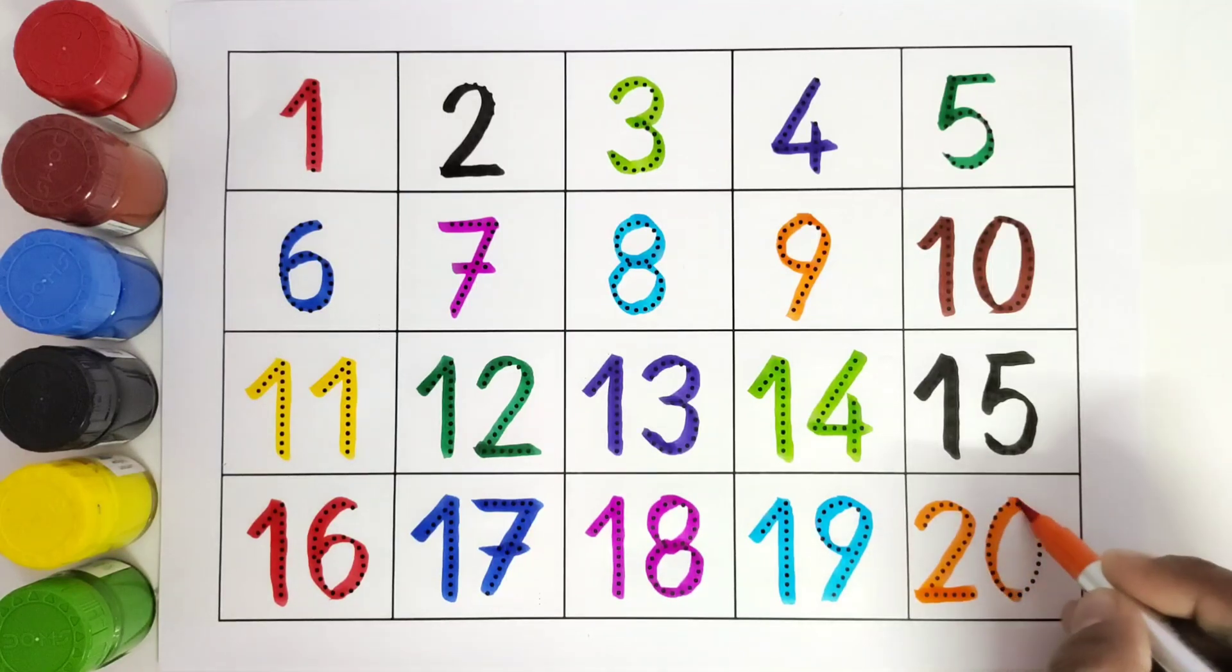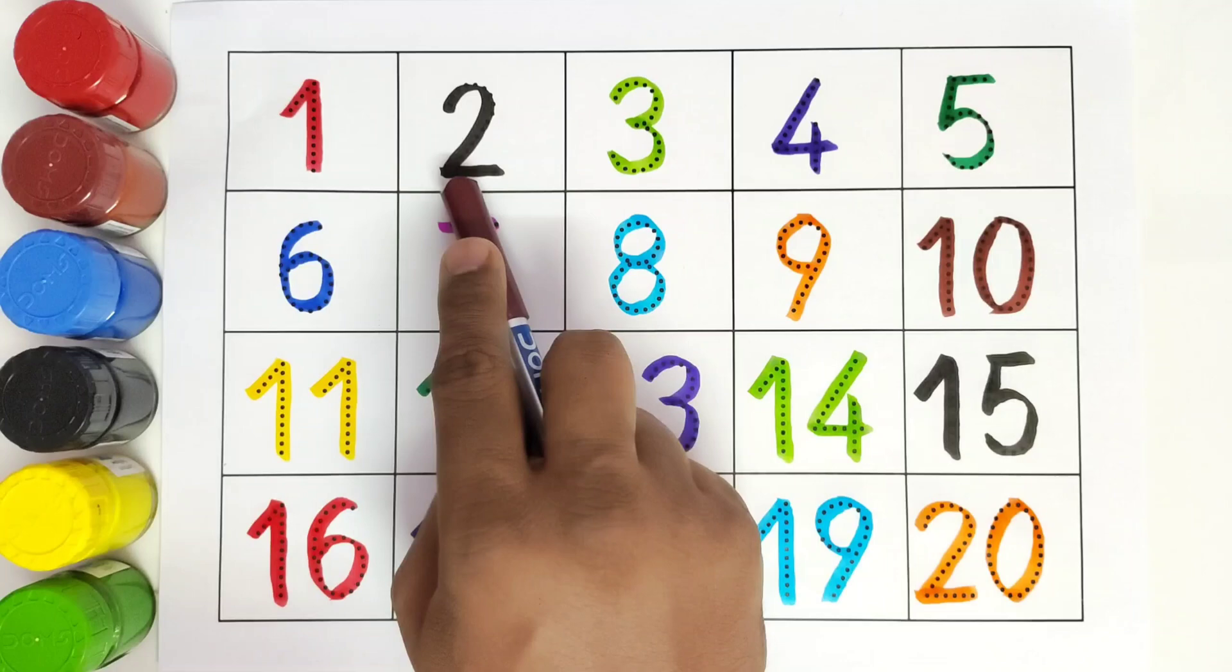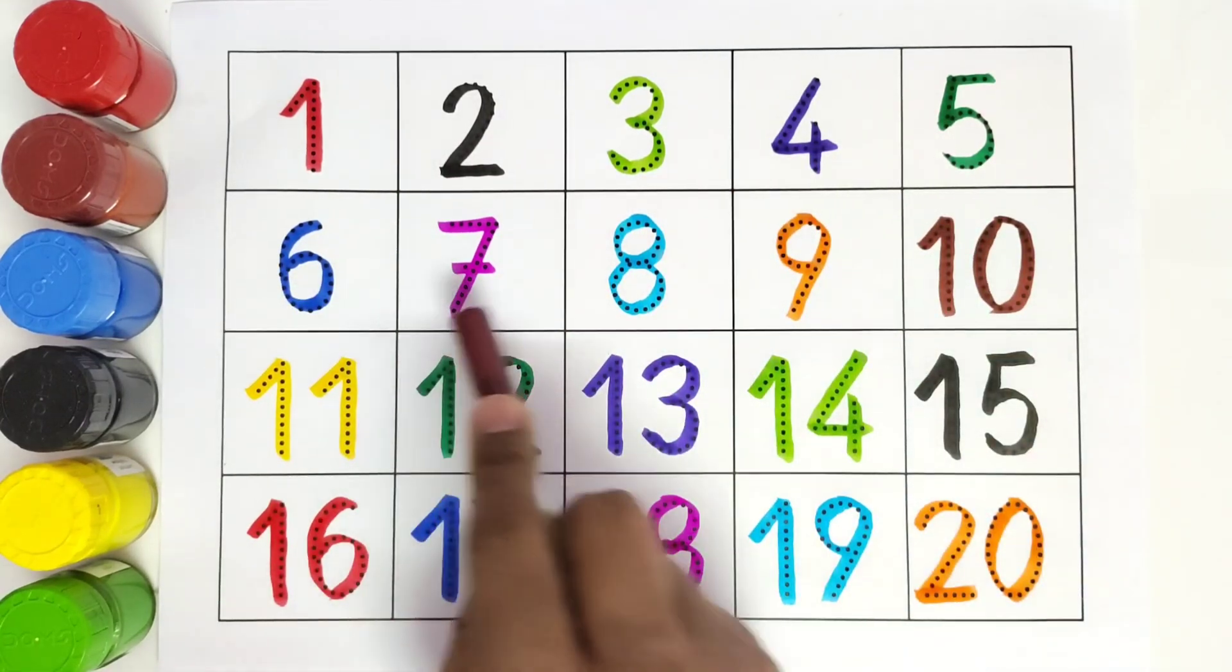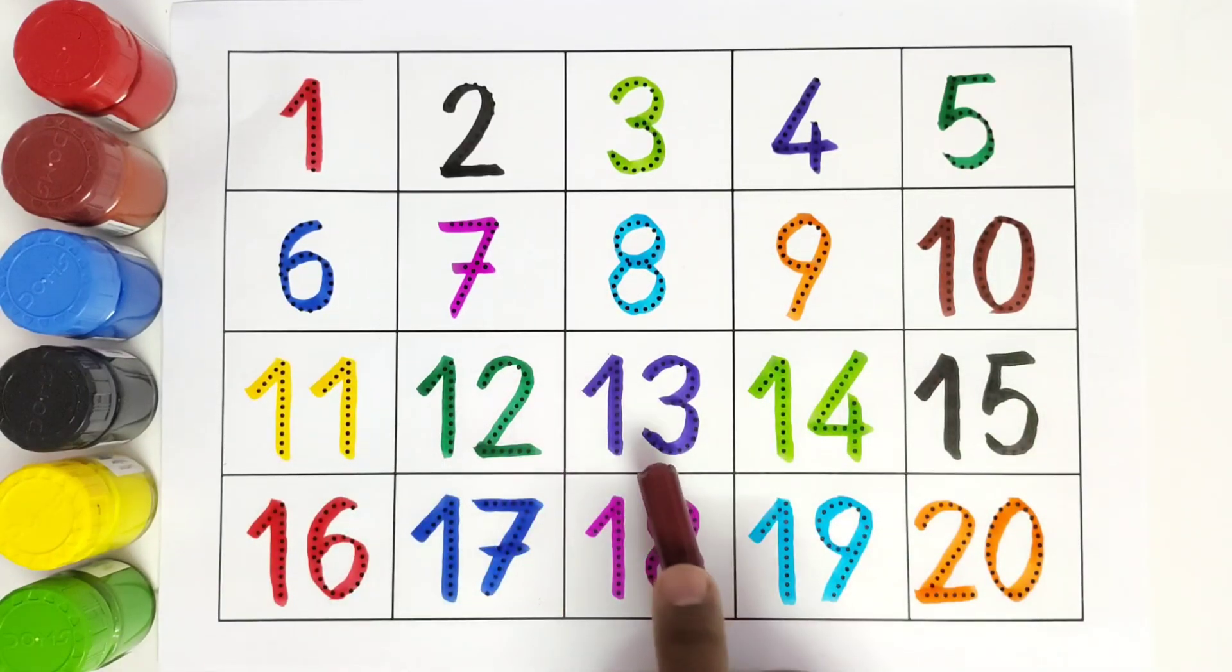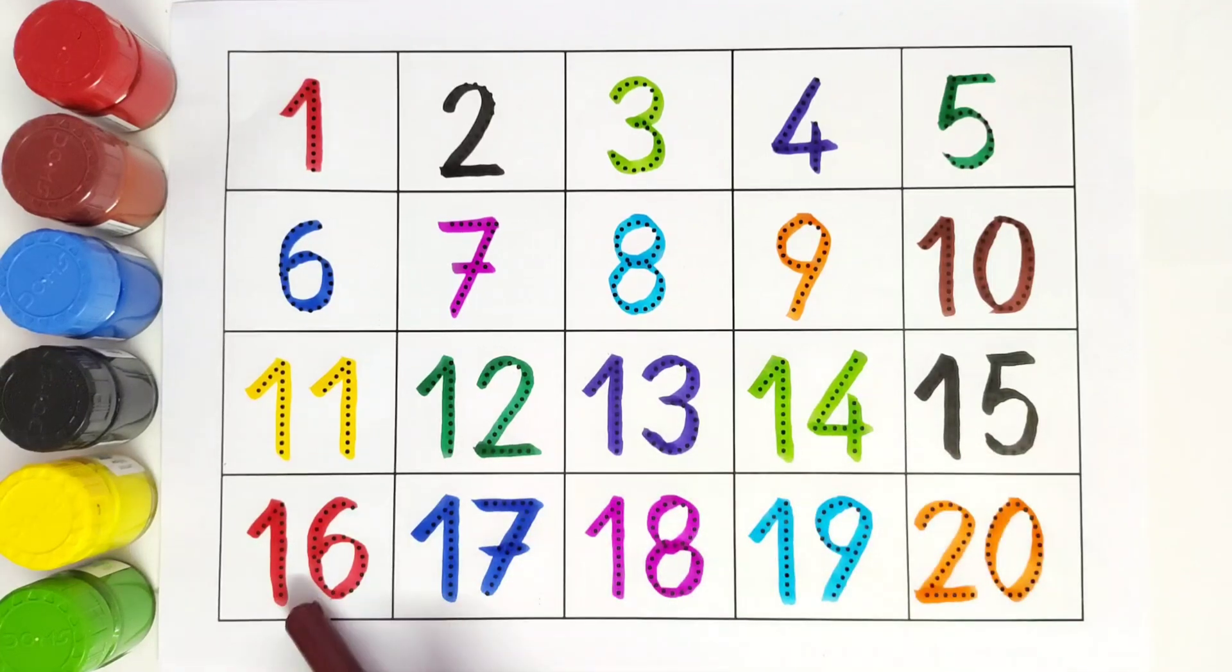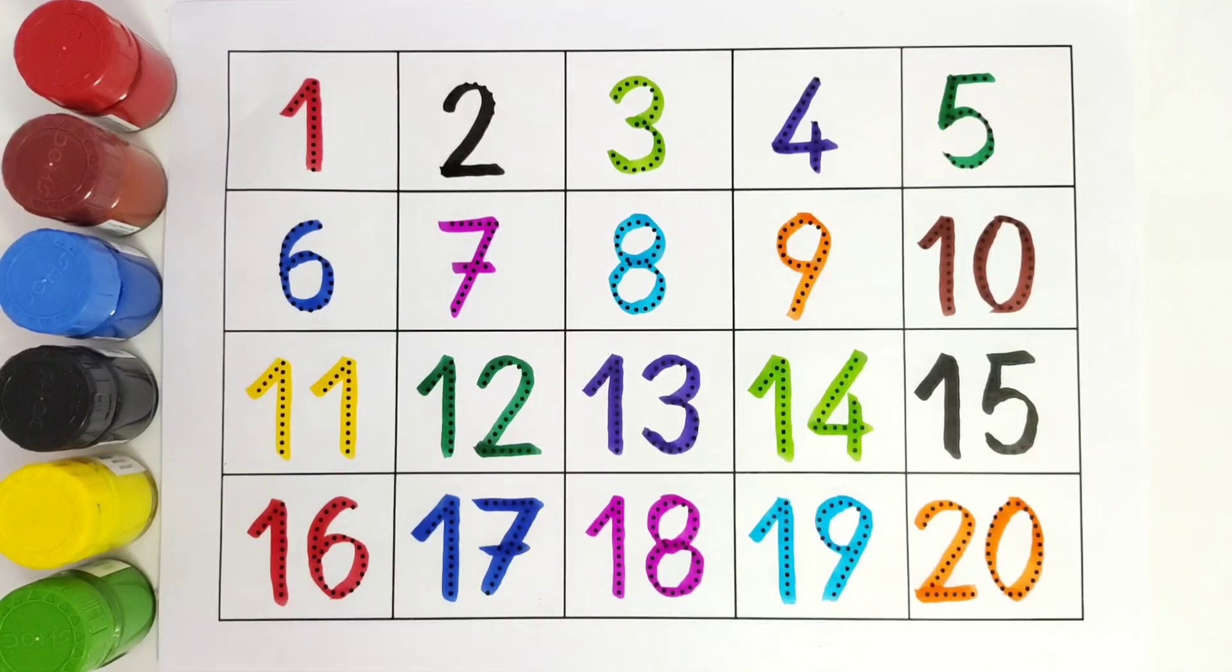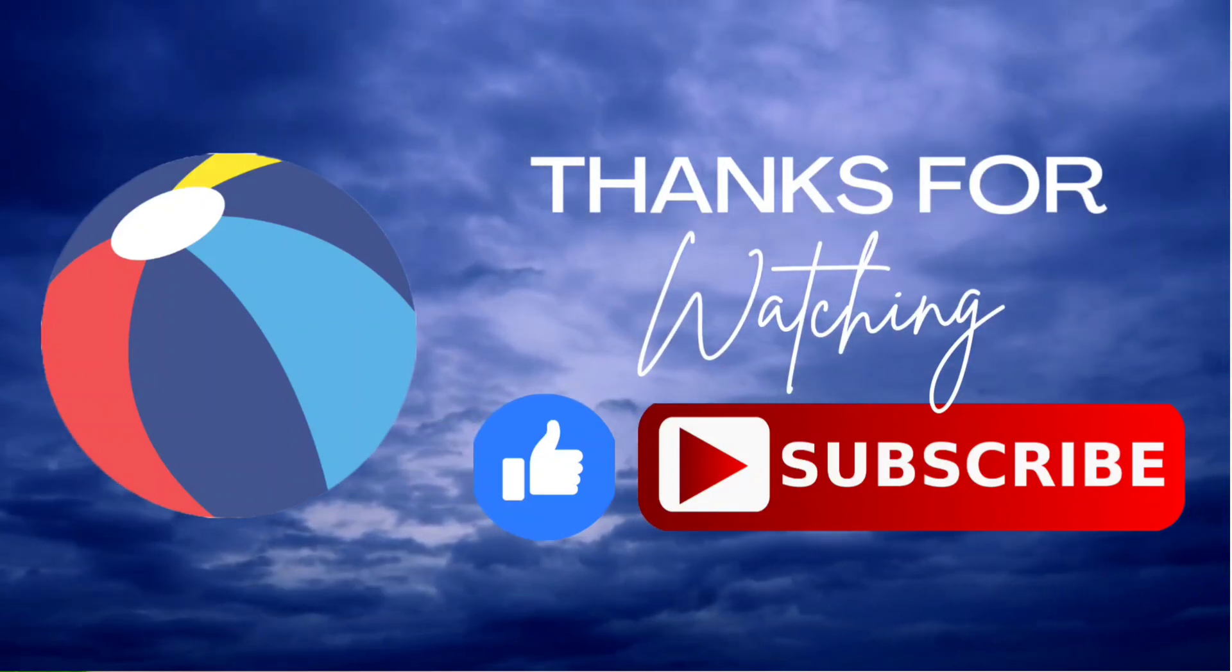Twenty. So kids, we will be reading these numbers: 1, 2, 3, 4, 5, 6, 7, 8, 9, 10, 11, 12, 13, 14, 15, 16, 17, 18, 19, 20. Thank you kids for coloring this with me. I hope you like this video. Do like and subscribe. Thank you, we will meet in the next video.